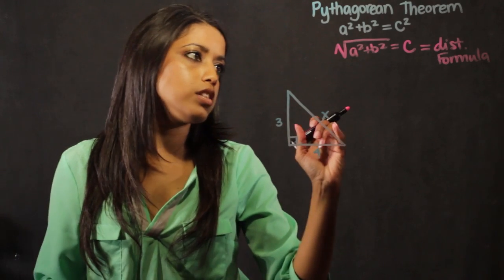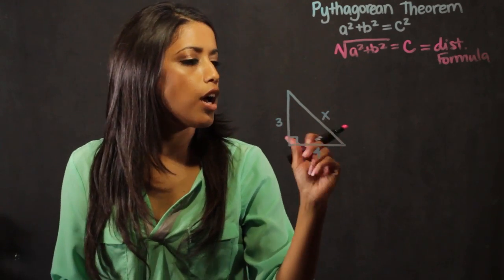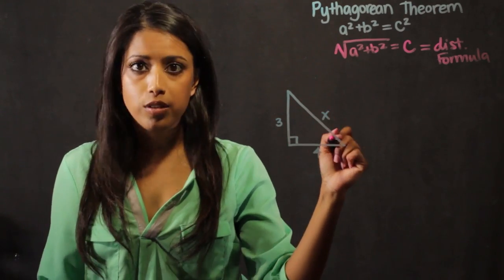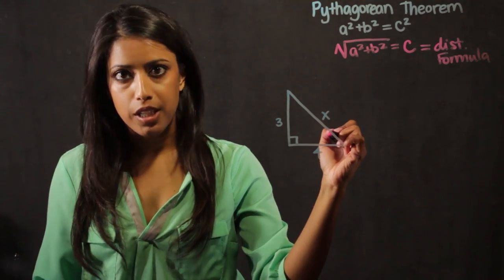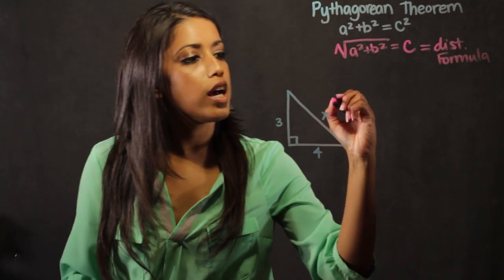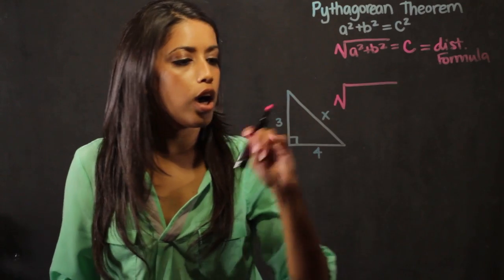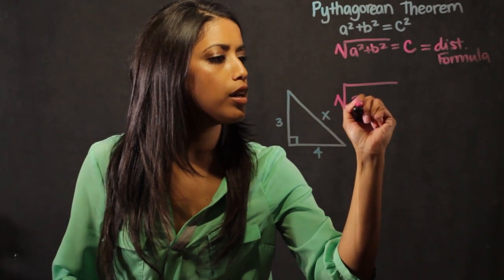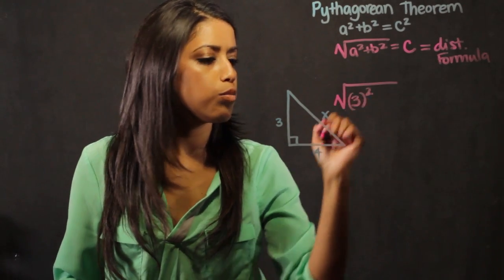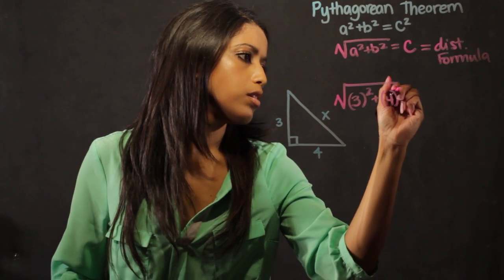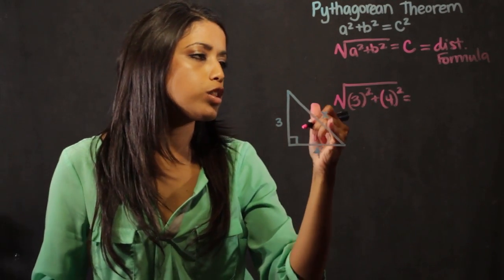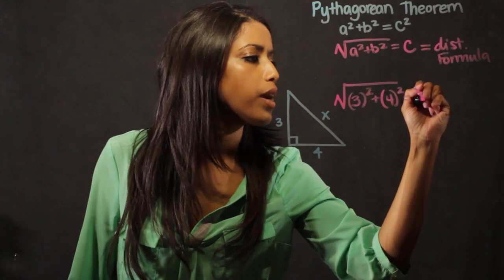So now I want to solve for this hypotenuse side which is represented as c. And here in the problem, it's represented with an x. So I use this formula, the square root of a squared which is going to be 3 squared plus b squared which is 4 squared, and I set it equal to my hypotenuse which is going to be my x.